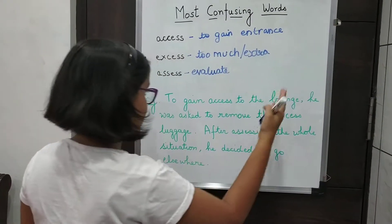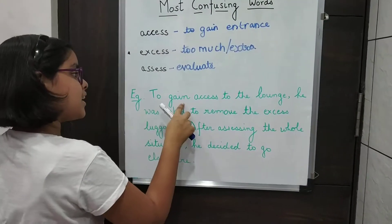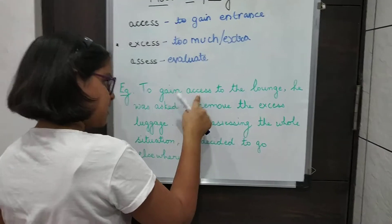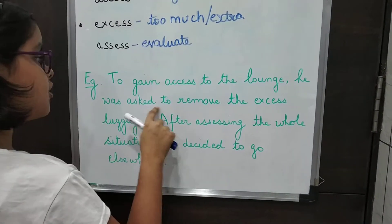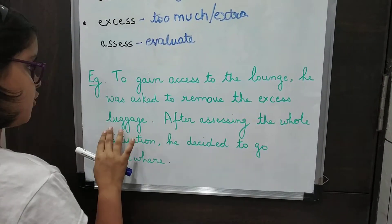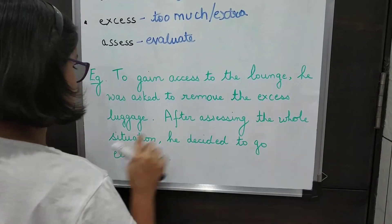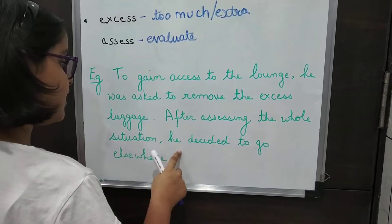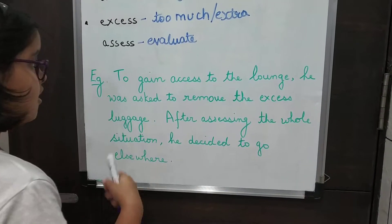I've thought of a sentence using all three words. To gain access to the lounge, he was asked to remove the excess luggage. After assessing the whole situation, he decided to go elsewhere.